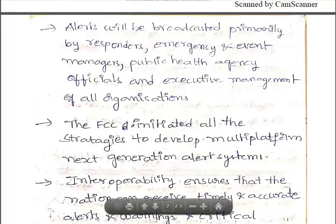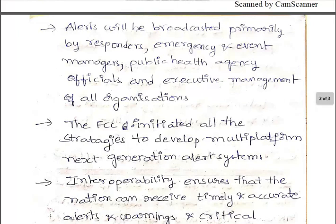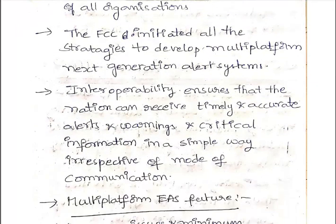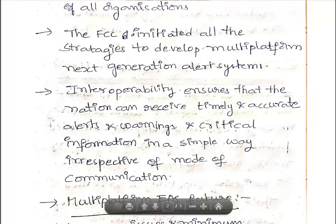As discussed in our last video, the existing Emergency Alert System has some drawbacks which will be overcome by the next generation system, and such an initiative has been taken by the FCC. This interoperability ensures that the nation can receive timely and accurate alerts, warnings, and critical information in a simple way, irrespective of the mode of communication — whether TV, internet, phones, or other means.